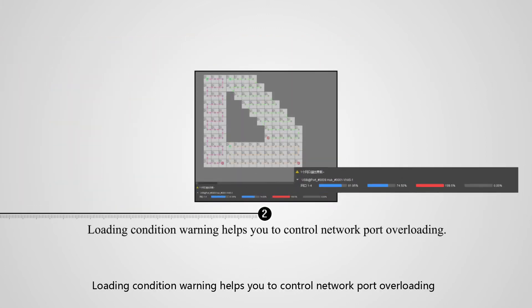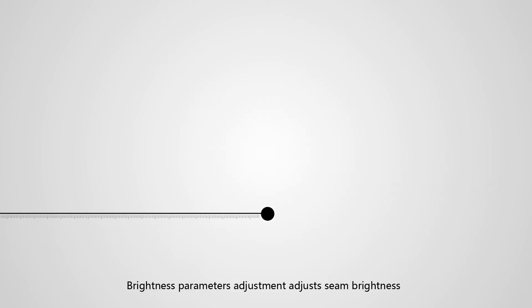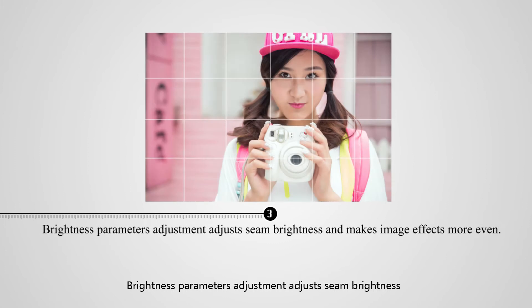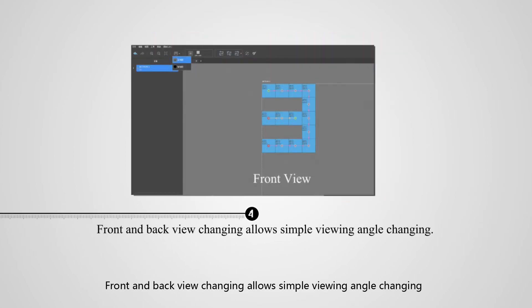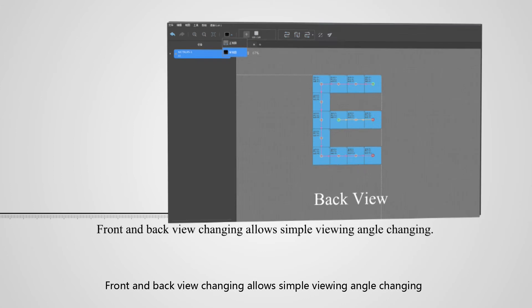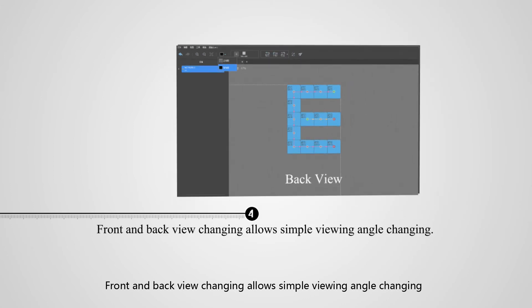Loading condition warning helps you to control network port overloading. Brightness parameters adjustment adjusts seam brightness and makes image effects more even. Front and back view changing allows simple viewing angle changing.